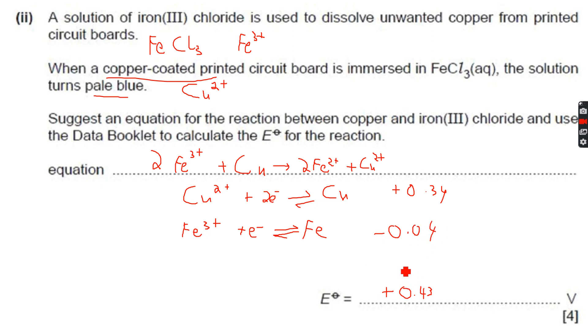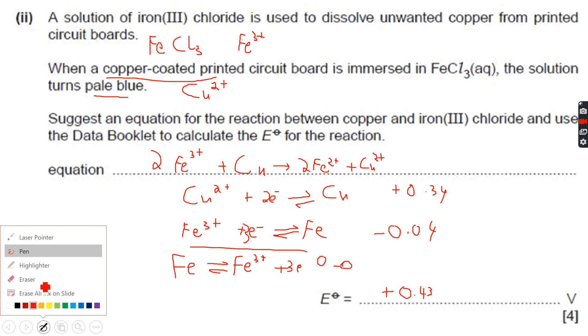In that case it becomes Fe3+ plus 3e- gives Fe. This has an electrode potential, if you look at the data booklet, of -0.04. Now if you see, -0.04 is less than 0.34, so we will have to invert this equation. When we invert this equation, this becomes Fe gives Fe3+ plus 3e-, and therefore we get +0.04.